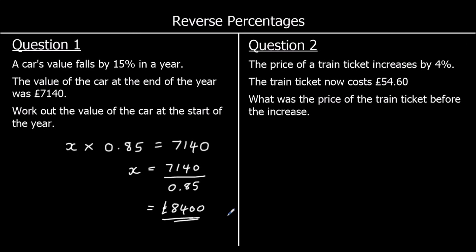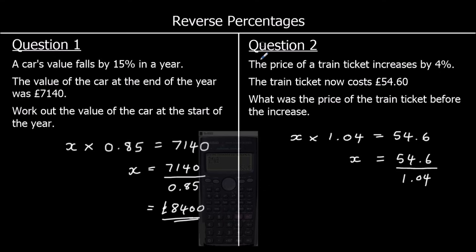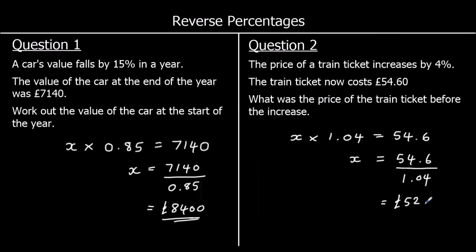And question 2. The price of a train ticket increases by 4%. The train ticket now costs £54.60. What was the price of the train ticket before the increase? So we've increased by 4%. So 100% plus 4% is 104%, or as a multiplier, as a decimal, 1.04. So the original times 1.04 equals £54.60. To get x by itself, to get the original, divide both sides by 1.04. So 54.6 divided by 1.04, and that is £52.50.